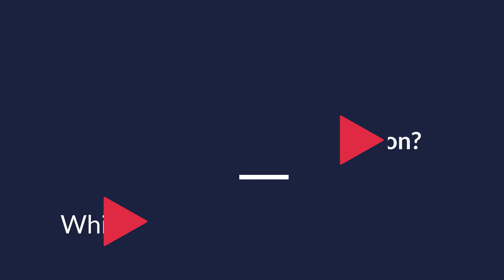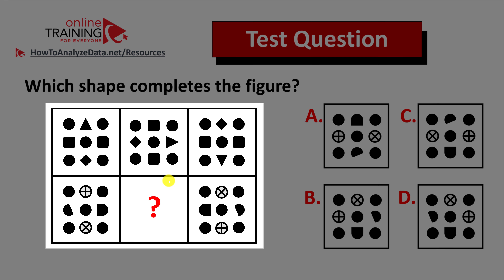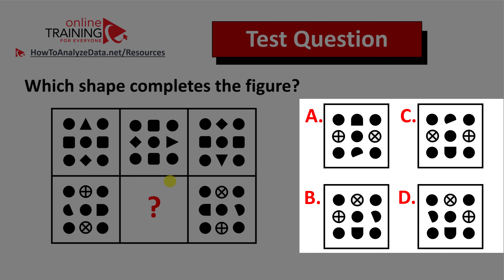Let me share with you a tricky question which tests your pattern recognition and logical reasoning skills. You're presented with a rectangle which inside contains six different shapes and one of the shapes is missing. You need to determine which shape completes the figure, and you're presented with four different choices: A, B, C, and D.